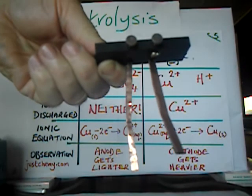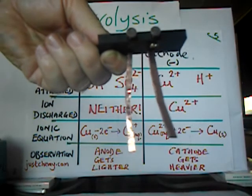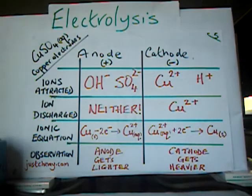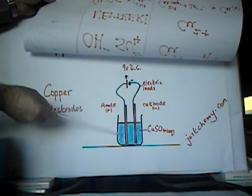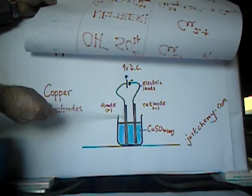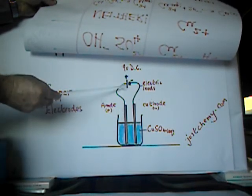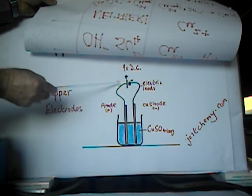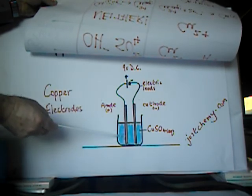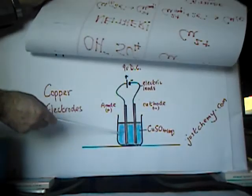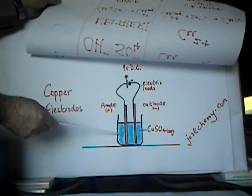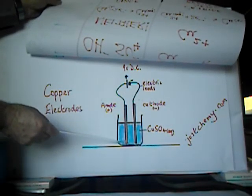Copper is quite happy to give up electrons and become copper ions. So in this particular case, if we look back at the diagram, at this electrode here, the source of electrons, the battery wants to pull electrons, doesn't care where it gets them from. Will it be the hydroxyl ions or the sulfate ions that are attracted to the positive electrode? No.